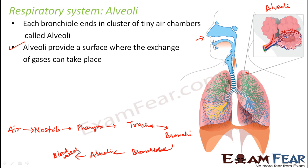Blood flows throughout our body through tiny tube-like structures called arteries, veins, and capillaries. These blood vessels are present in the alveoli, which are richly supplied with them. From the alveoli, oxygen gets into the blood vessels, and since blood flows throughout the body, it transports oxygen to all cells. Oxygen is what the cells of our body need.